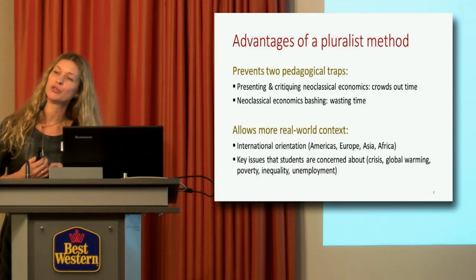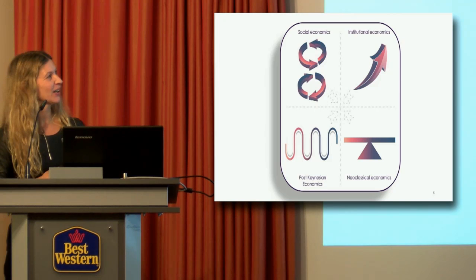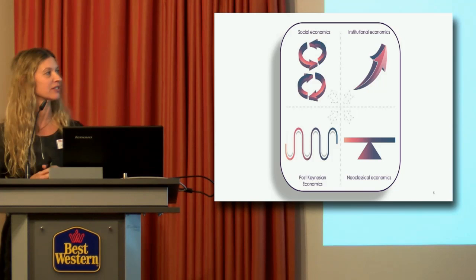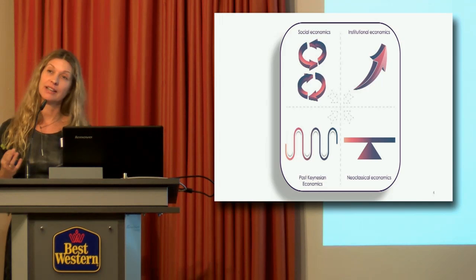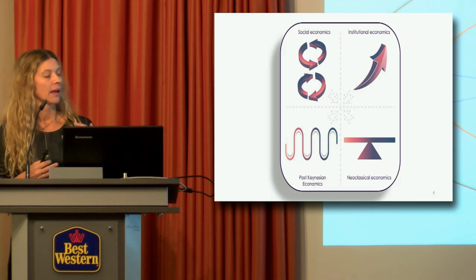These are the symbols I use for the four theories in my MOOC. Social economics — do you recognize Gunnar Myrdal's idea? Institutional economics: behavior guided in a particular direction, shared social norms, rules, pattern behavior. I use a cyclical movement for post-Keynesian economics, and a balance for neoclassical economics.